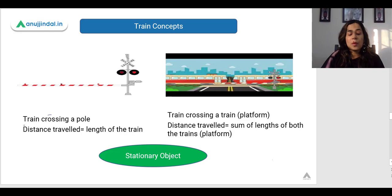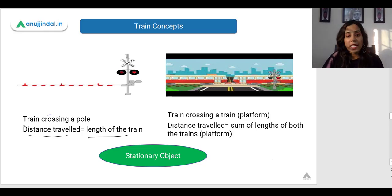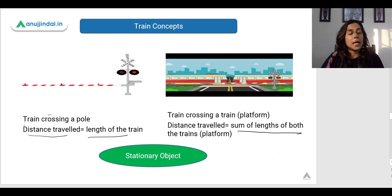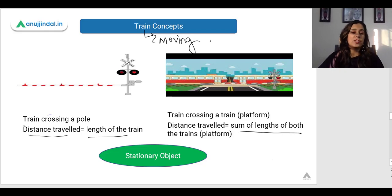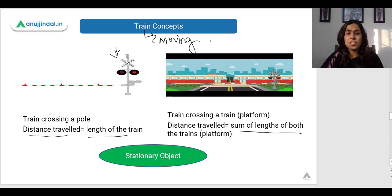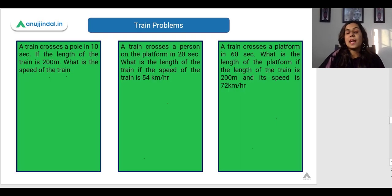As I explained, when a train is crossing a pole the distance travelled equals the length of the train. When the train is crossing a platform or another train, the distance travelled equals the sum of the lengths of both trains or the sum of the length of the train and the platform. In this case one object is stationary — it could be a pole, a person standing, a stationary train, or the platform itself.